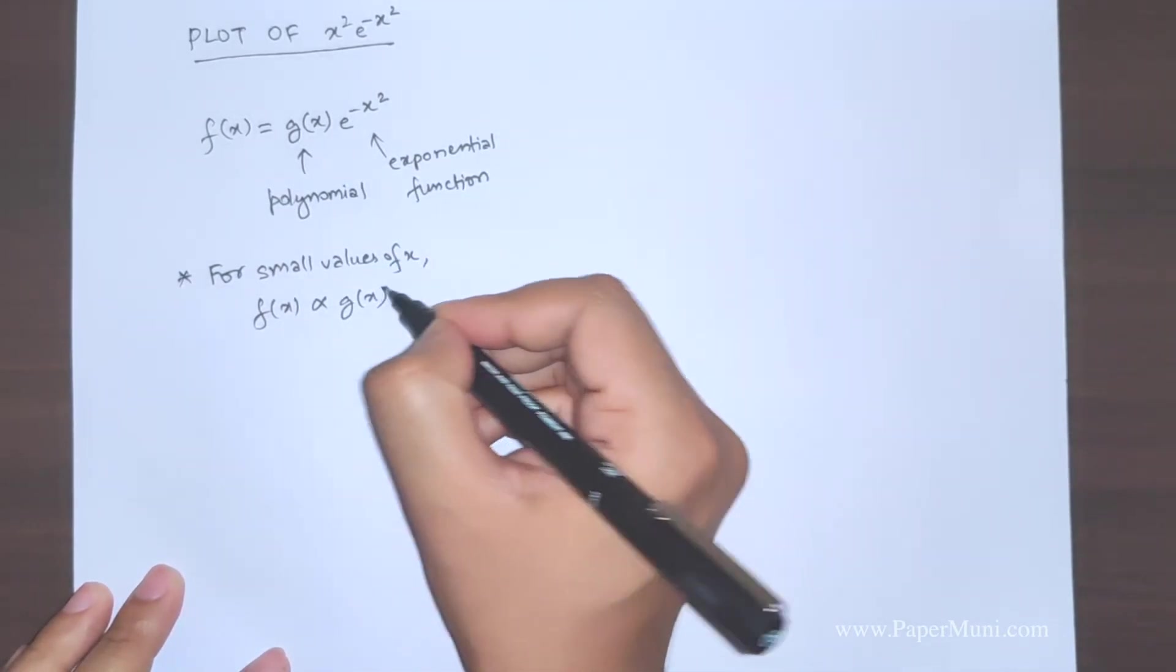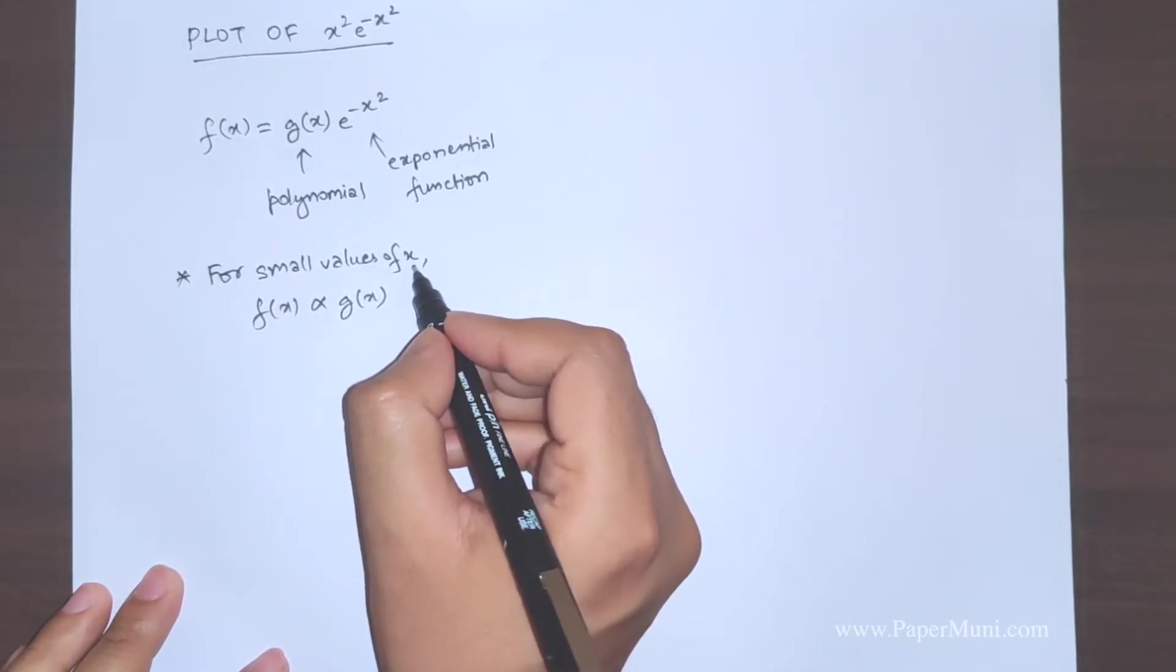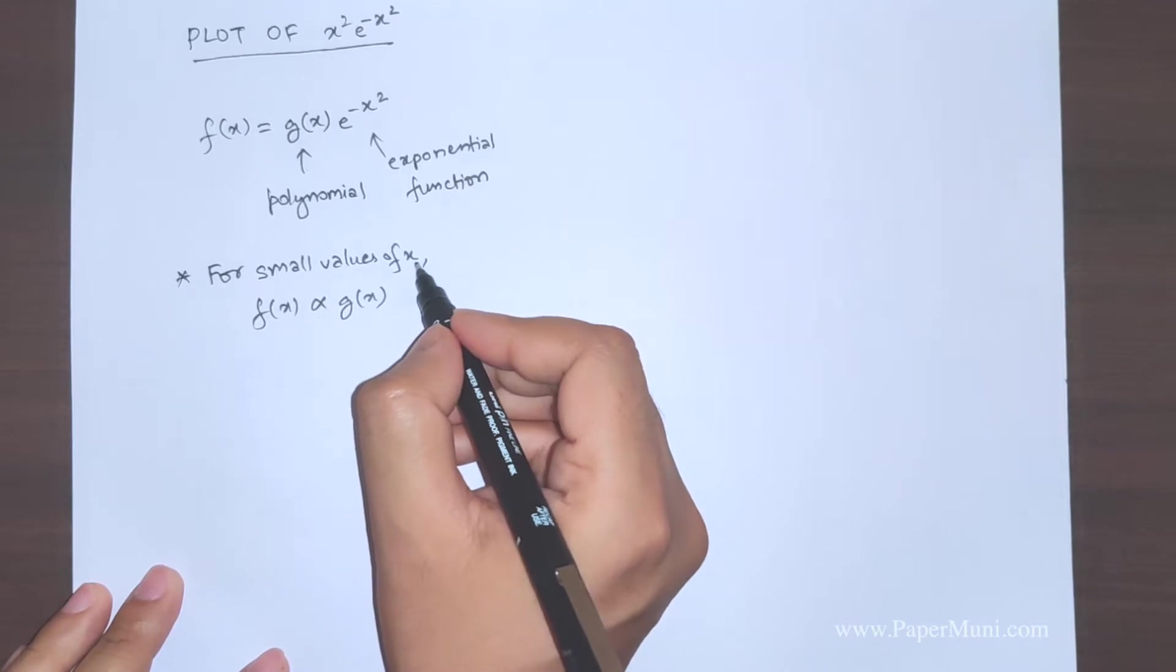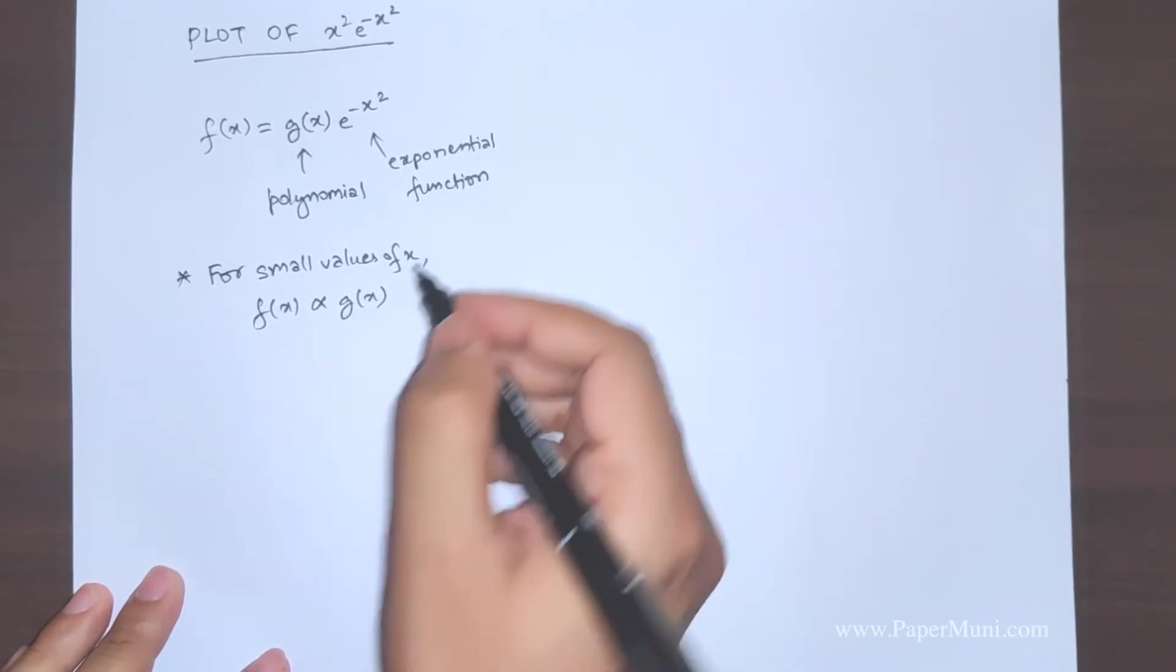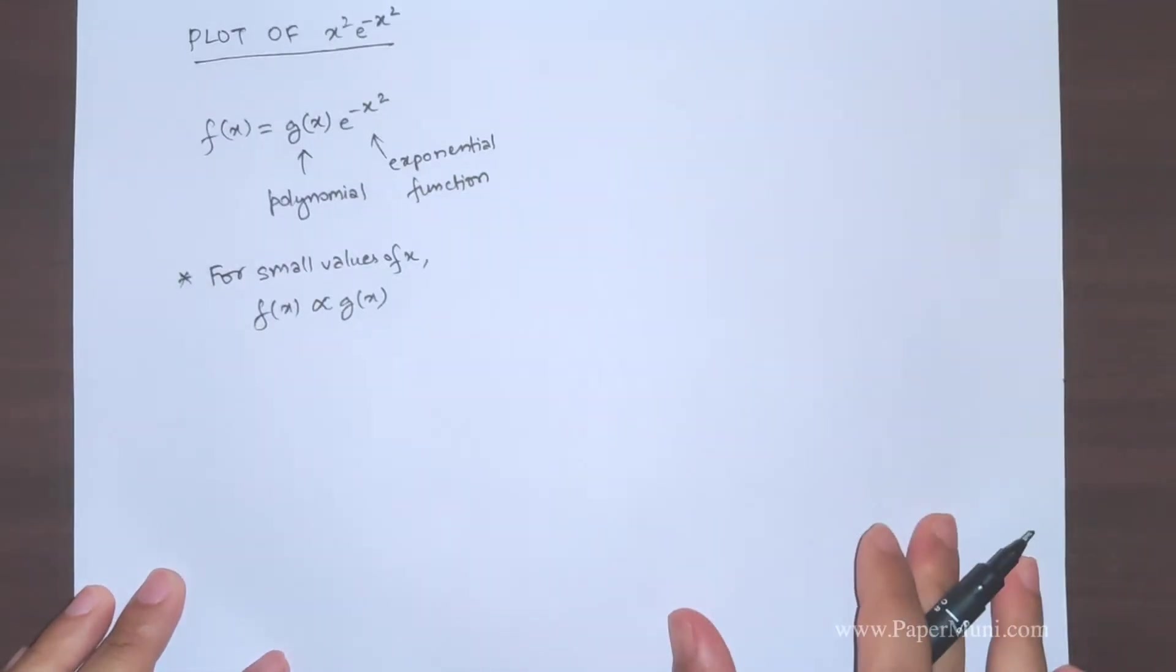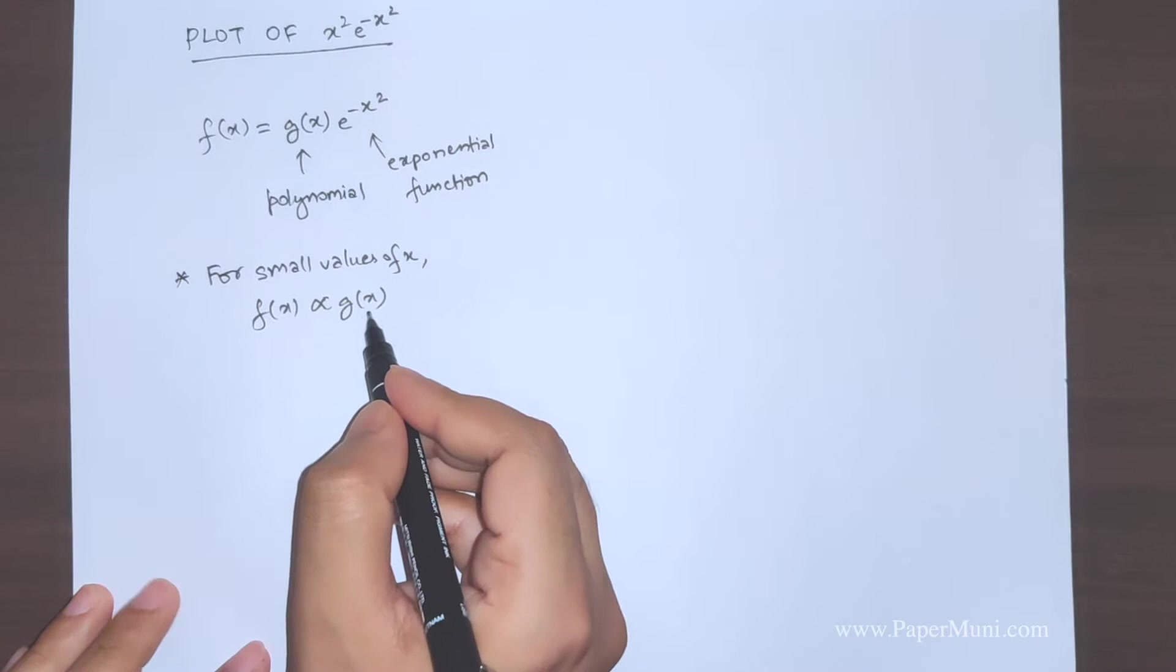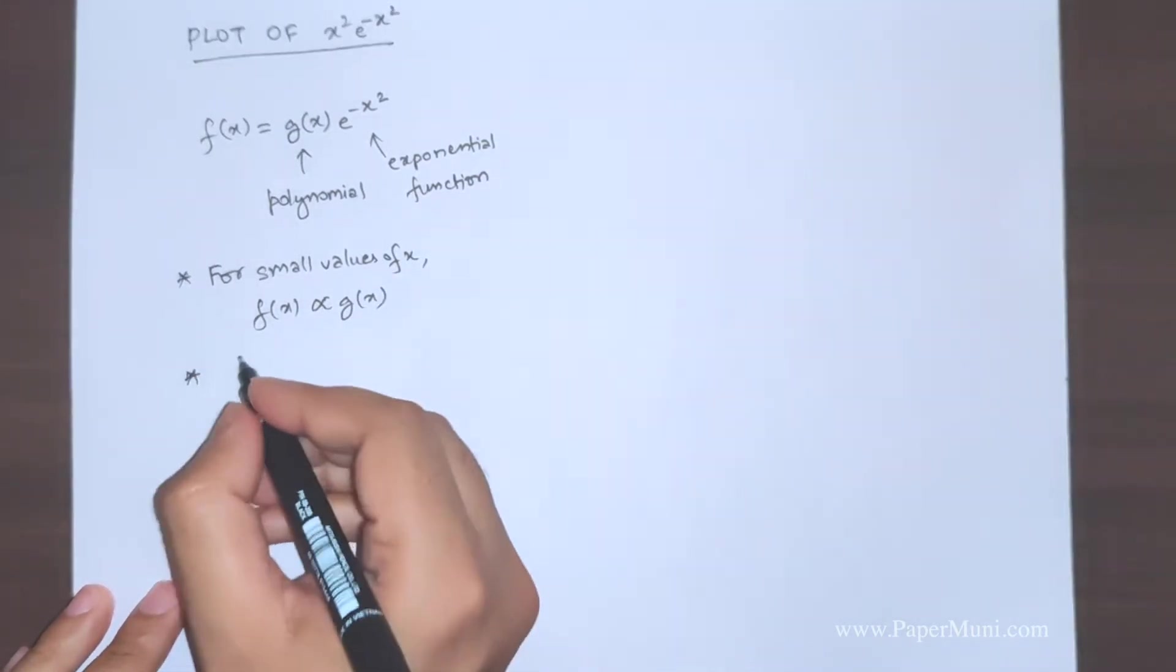Now this means that for small values of x, it's near zero like 0.1, 0.2, less than one. So in that case the total function will depend on the values of the polynomial. The exponential part will be very negligible. The contribution from the exponential part will be negligible.